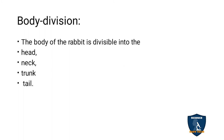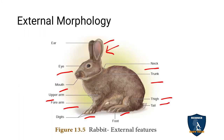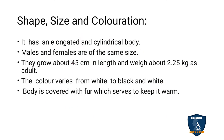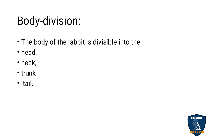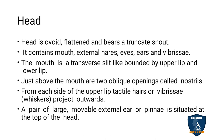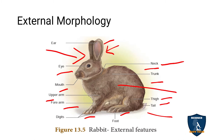Body division: the body is divided into head, neck, trunk, and tail. The head is ovoid, flattened, and bears a truncate snout. The snout is present in the middle, somewhat flattened at the front portion.